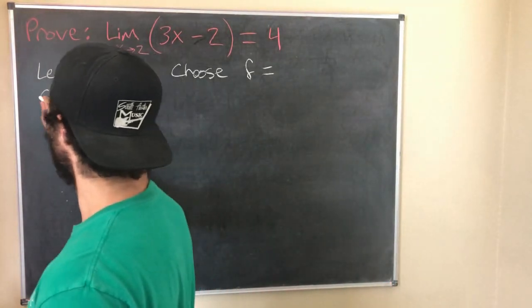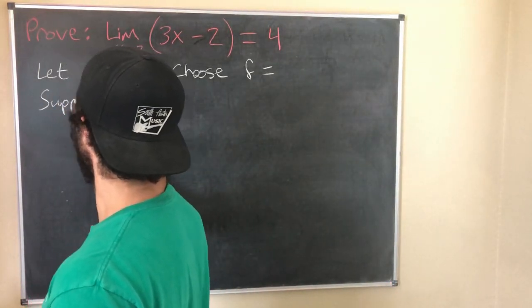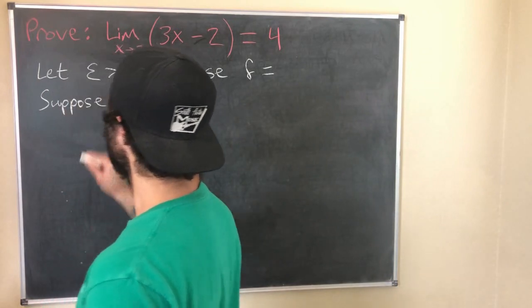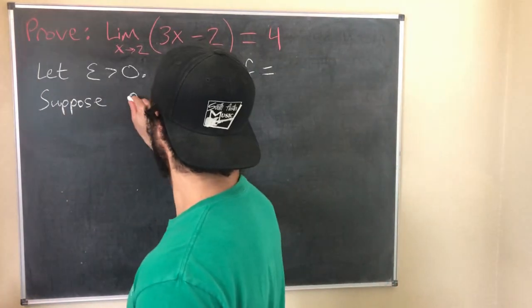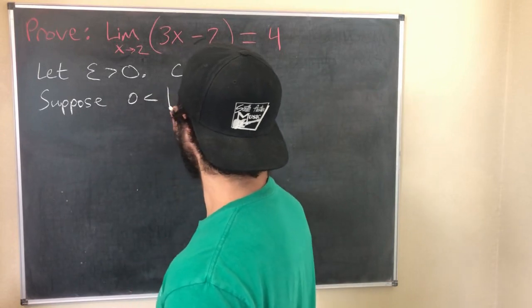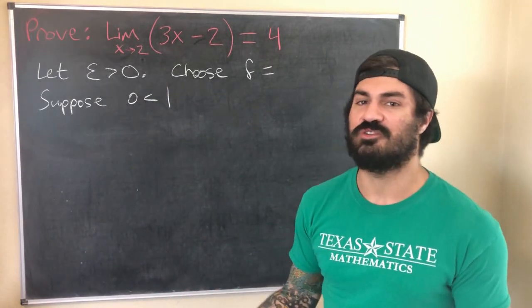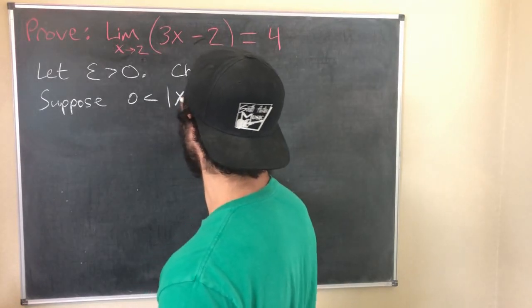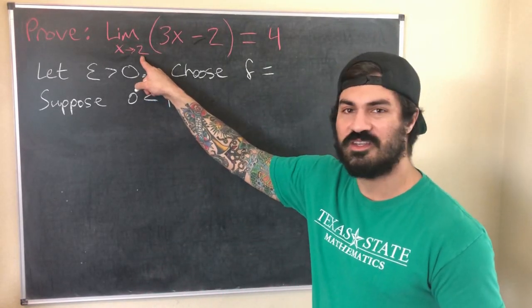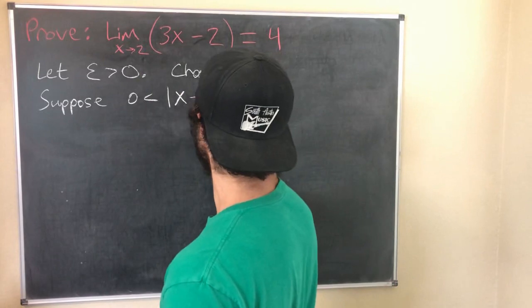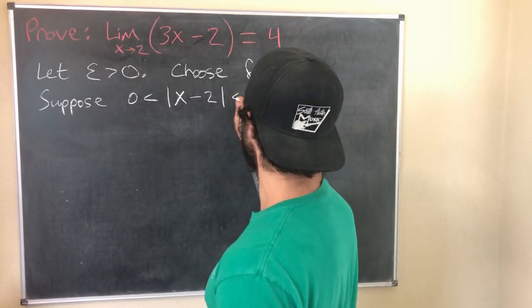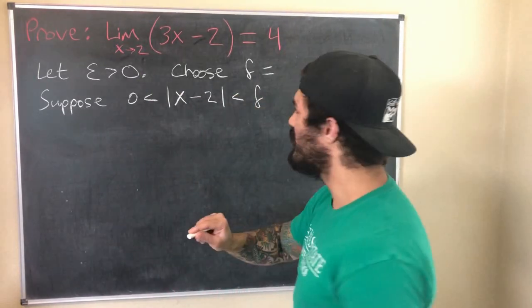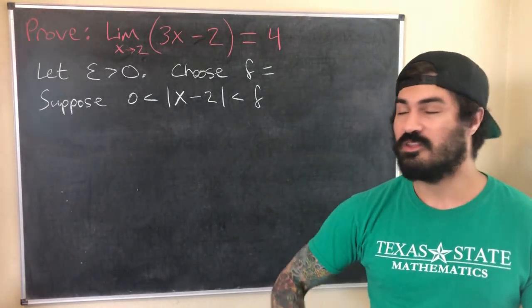Okay, so we're going to choose this delta which we don't know yet. But once we choose that delta, we're going to assume - suppose - remember what's the rest of our definition: if zero is less than, I call this whole thing the delta expression, but it's this x minus a, or x minus c, whatever letter you call this guy here. So in this case x minus 2.